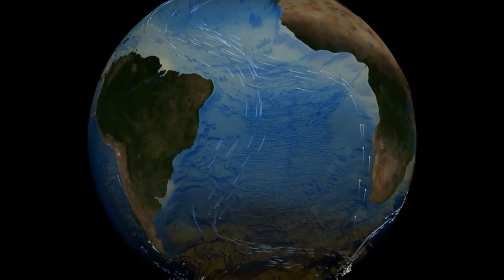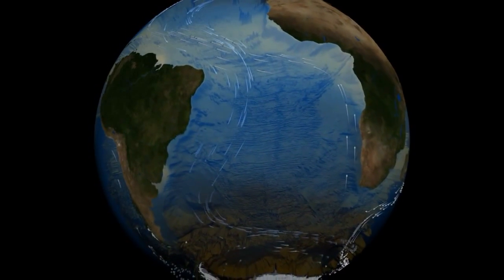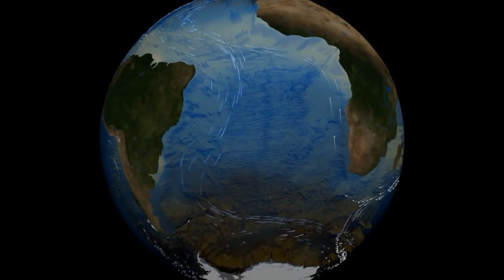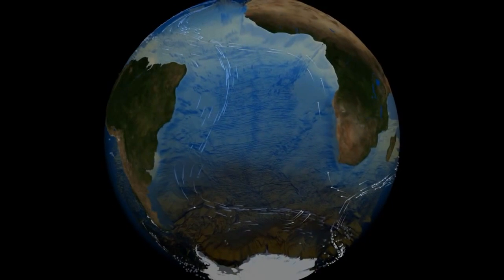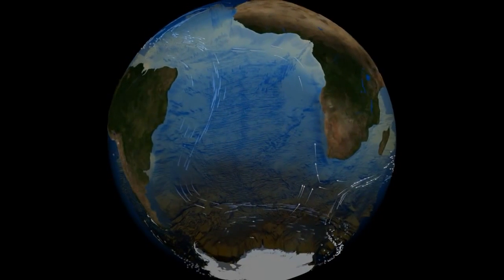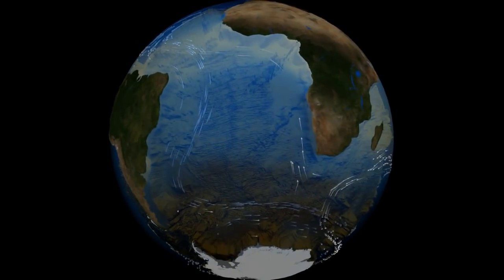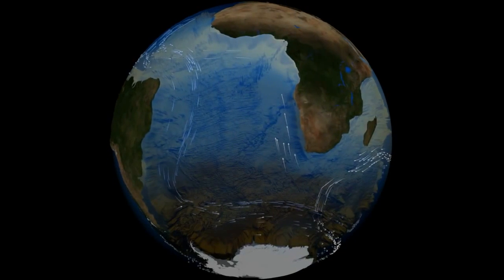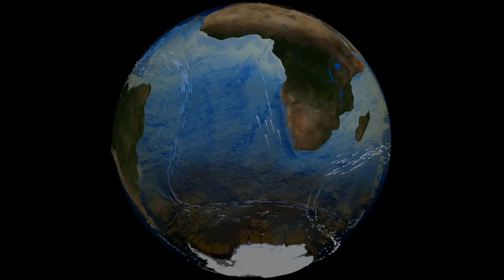These ocean currents affect the temperature of nearby land masses, much as major gyres affect surface waters. Movement of warm waters brings warmer temperatures where it goes, and vice versa.